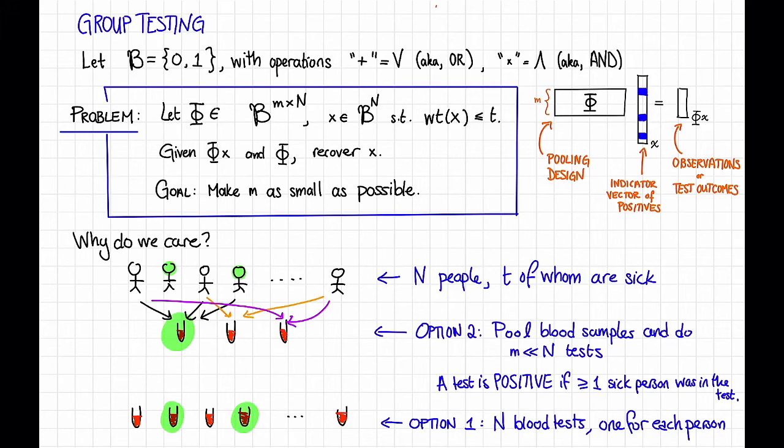Okay, so that's the setup. And the hope is that from the outcome of these pooled tests, we can figure out who the t sick people are. And ideally, if m is much less than n, we'll have saved some resources by doing fewer tests. Okay, but what does this picture have to do with this problem?